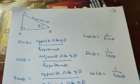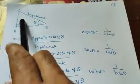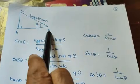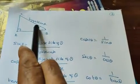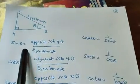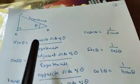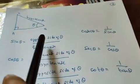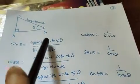Now define. What is sin? Consider triangle A, B, C. This angle is theta, and B is 90 degrees. What is sin theta? Sin theta is the opposite side of theta divided by the hypotenuse. What is the opposite of theta? That is A, C. What is the hypotenuse? That is A, C.